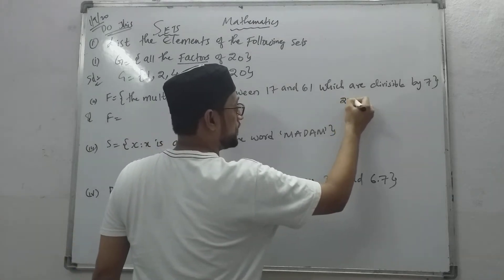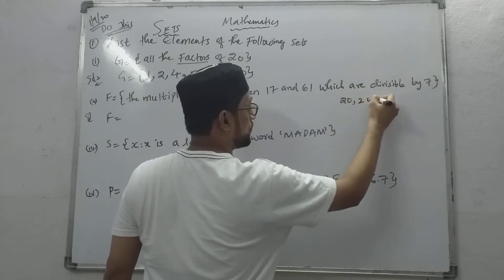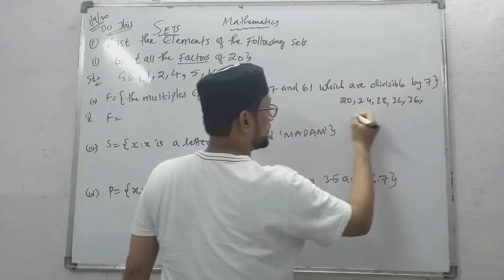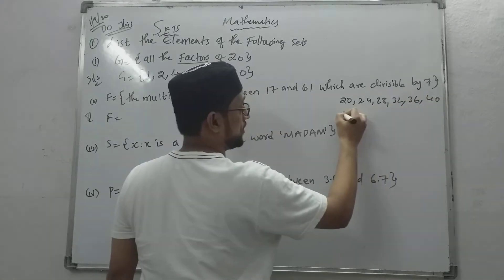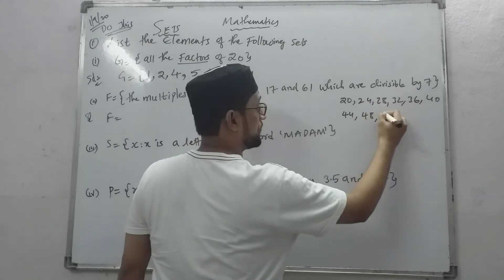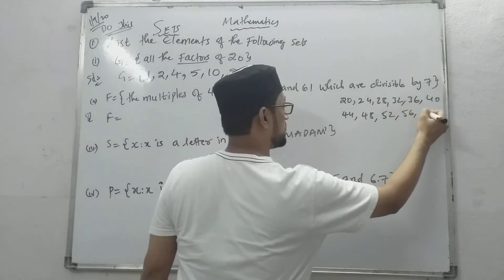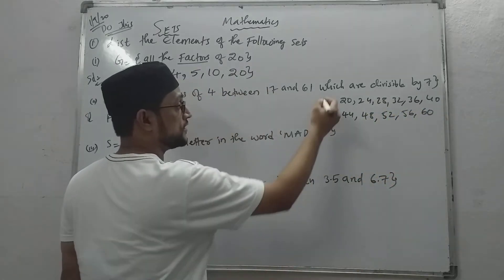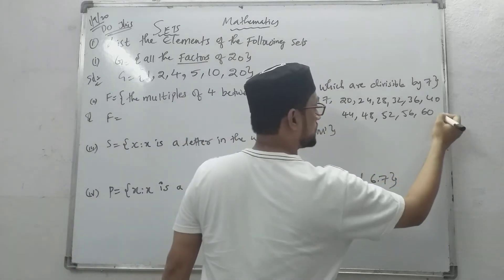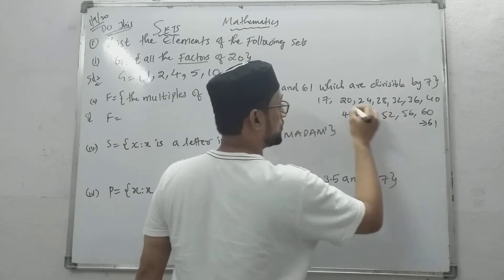Now tell me, what are the multiples between seventeen and sixty-one? Four fives are twenty, four sixes are twenty-four, four sevens are twenty-eight, four eights are thirty-two, four nines are thirty-six, four tens are forty, four elevens are forty-four, four twelves are forty-eight, then fifty-two, then fifty-six, then sixty. See here? Seventeen - greater than. And sixty-one - less than. So these are the numbers.